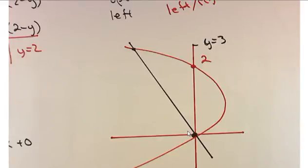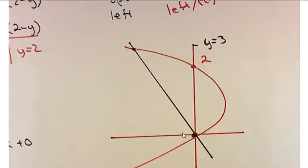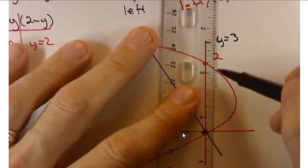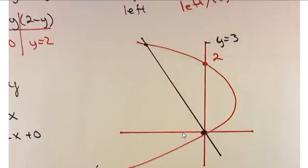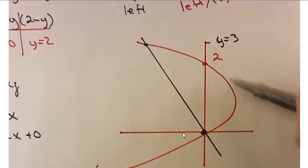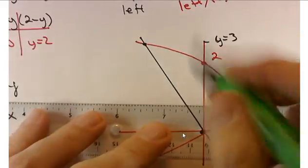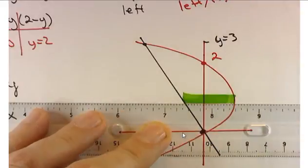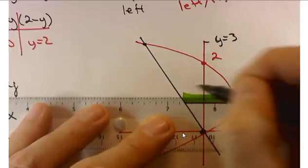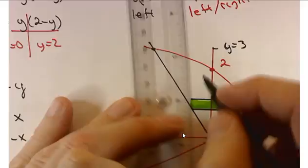So we integrate from 0 to 3 of negative y squared plus 3y dy. Let's finish with fnInt: math 9, between 0 and 3, of negative x squared plus 3x dx. The answer is 4.5, or 9 halves. This confirms the setup was correct.